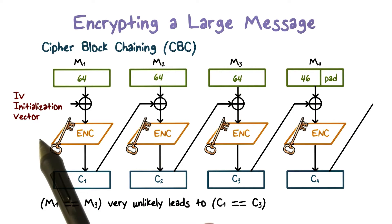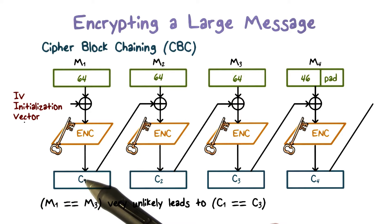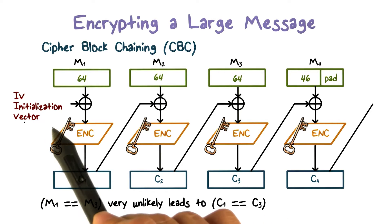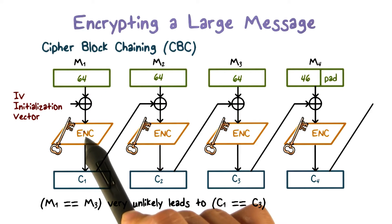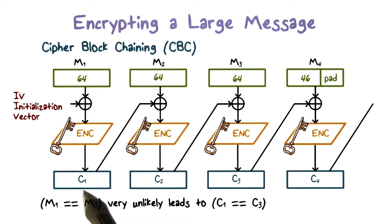To encrypt the first plaintext block, we use a so-called IV, which stands for initialization vector. We XOR the IV with the plaintext block and feed the input to the encryption process to produce the first ciphertext block.